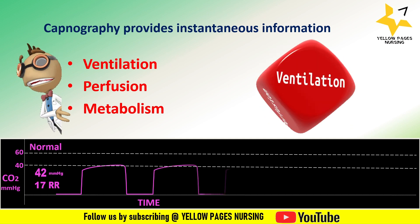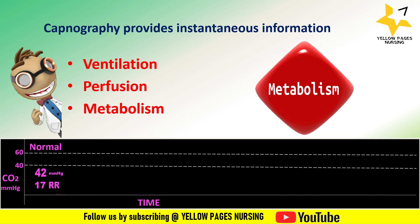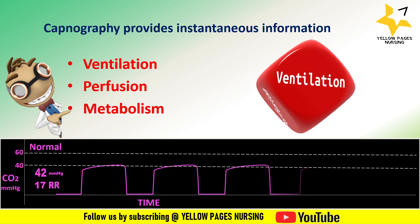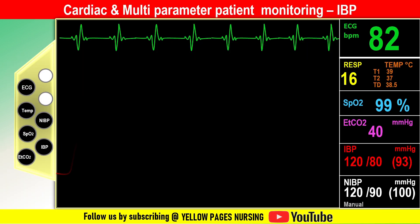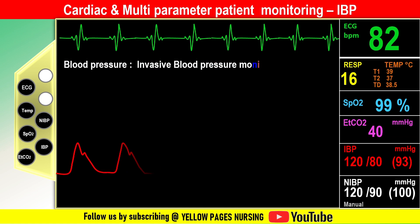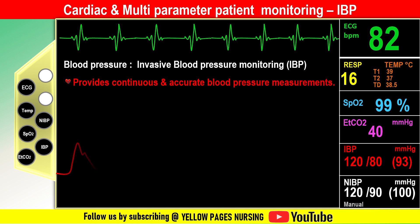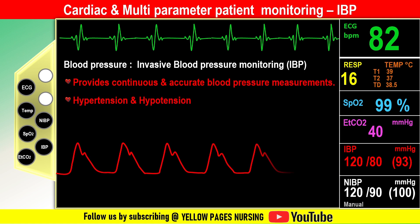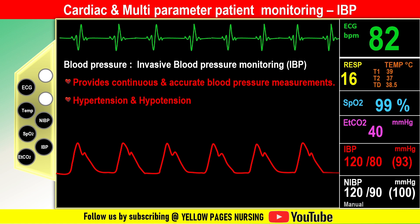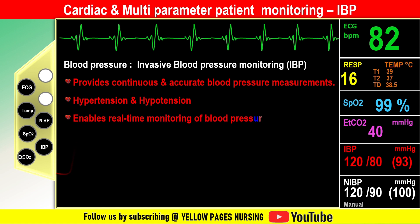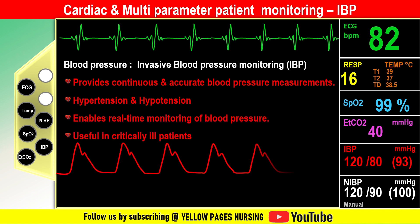Blood pressure monitoring includes two types: invasive and non-invasive. Invasive blood pressure monitoring provides continuous and accurate measurements including systolic blood pressure, diastolic blood pressure, and mean arterial pressure. Alarms are set for hypertension and hypotension. This enables real-time monitoring of blood pressure changes and is useful in critically ill patients for titrating vasopressors and other medications.